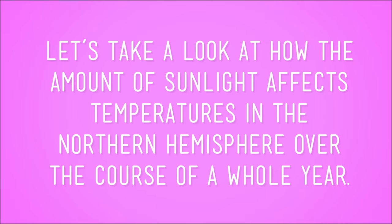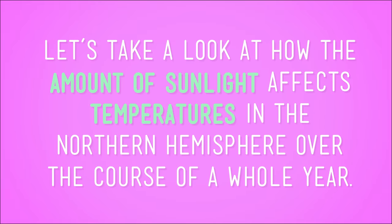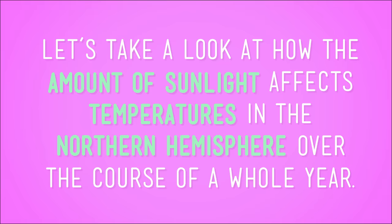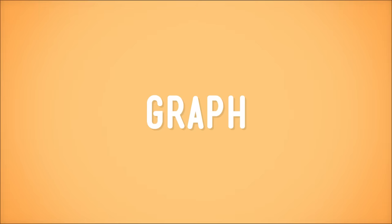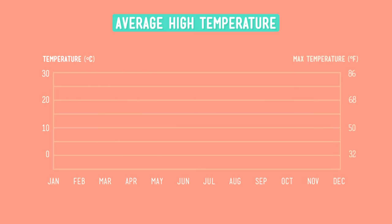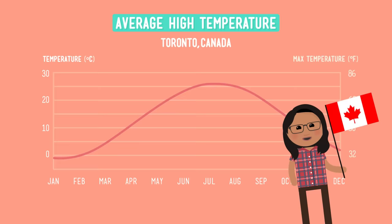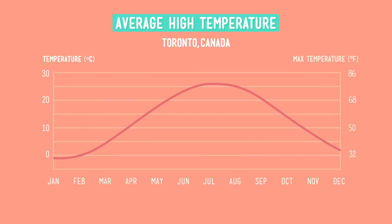Now let's take a look at how the amount of sunlight affects temperatures in the northern hemisphere over the course of a whole year. An easy way to show this yearly pattern is by using a graph. This graph shows the average high temperature in each month for one year in Toronto, Canada, where I live. Looking at the graph, we see that during December, January, and February, when the northern hemisphere is getting very little direct sunlight, temperatures are low. And in the months of June, July, and August, when the tilt of the Earth on its axis is causing Toronto to get direct sunlight, the temperatures are much higher.